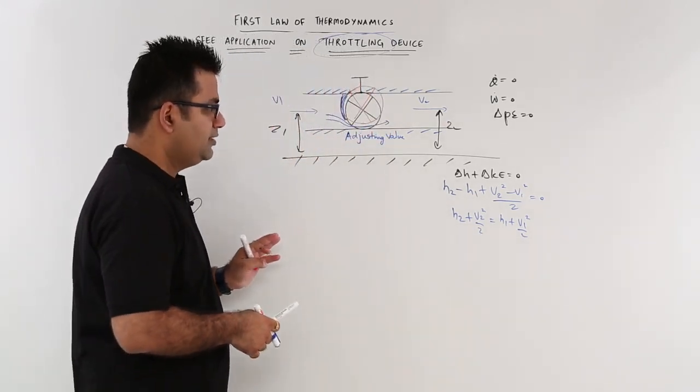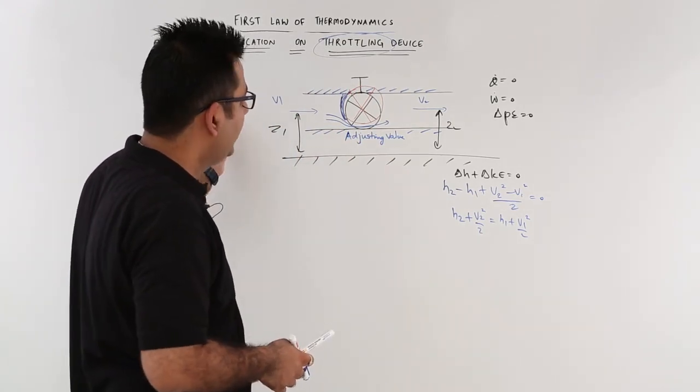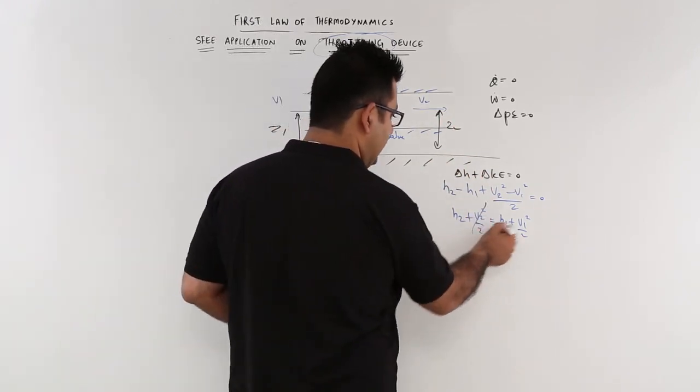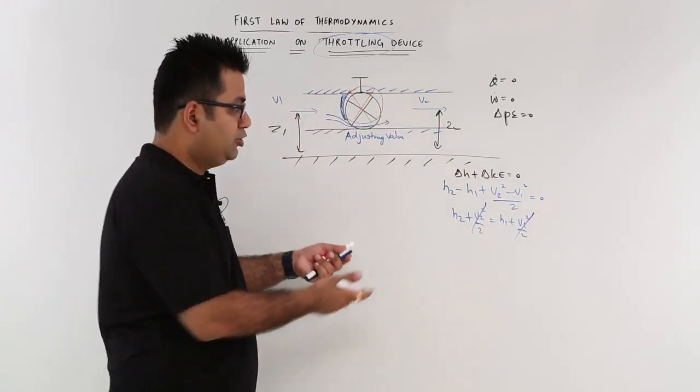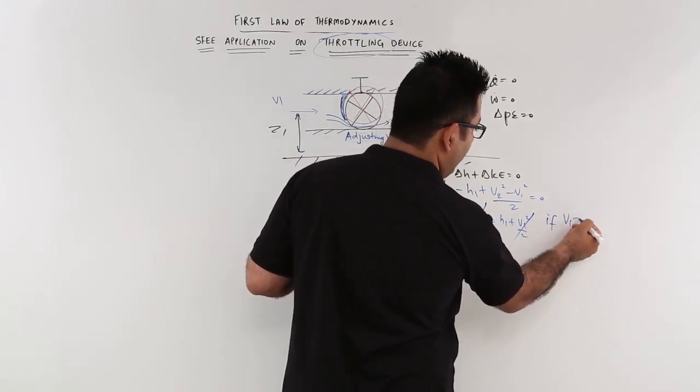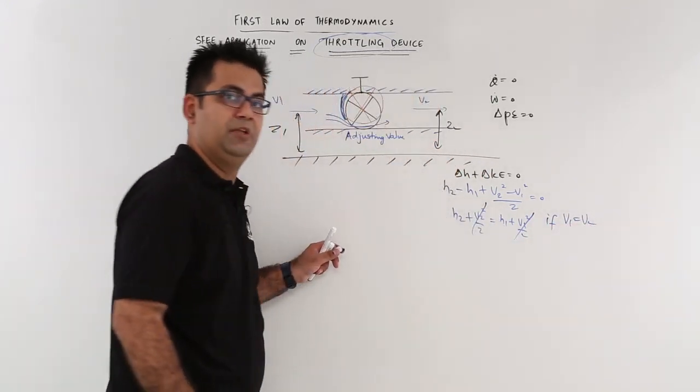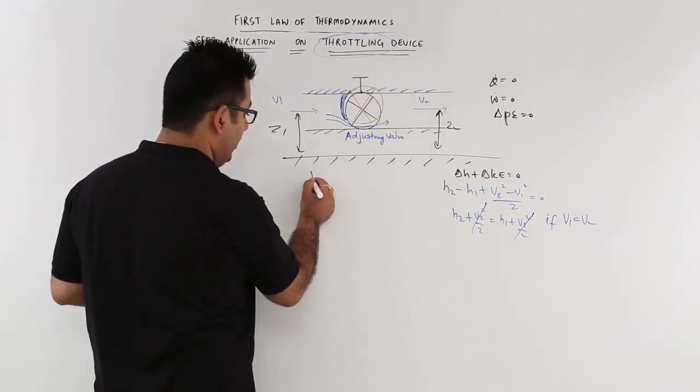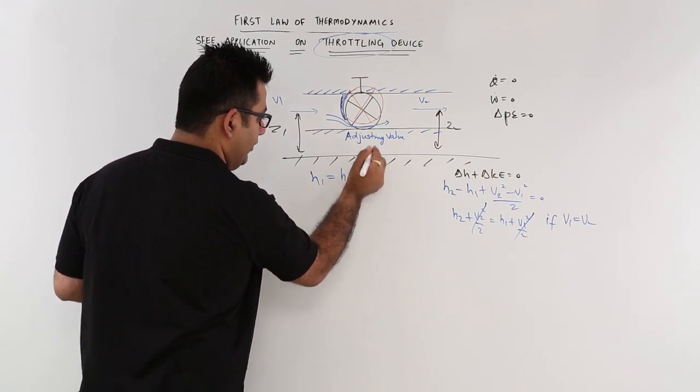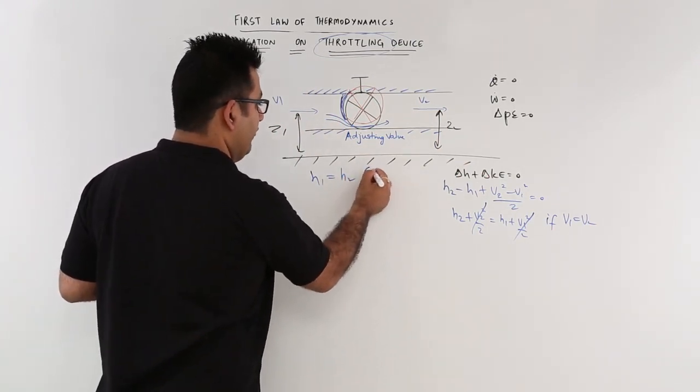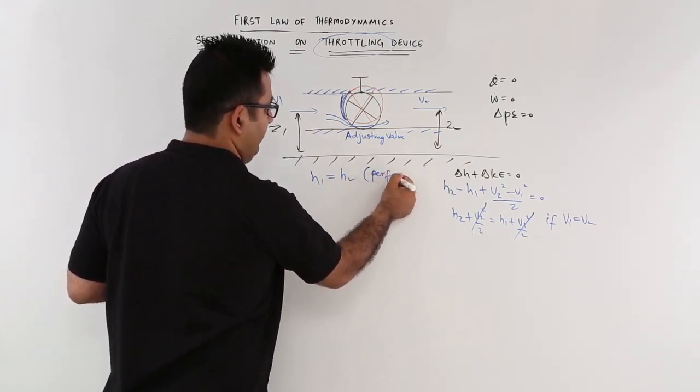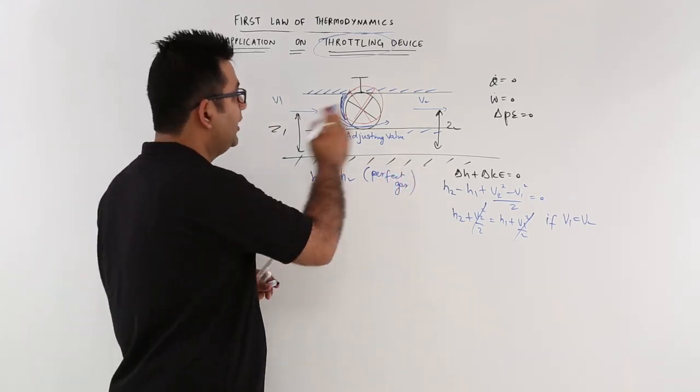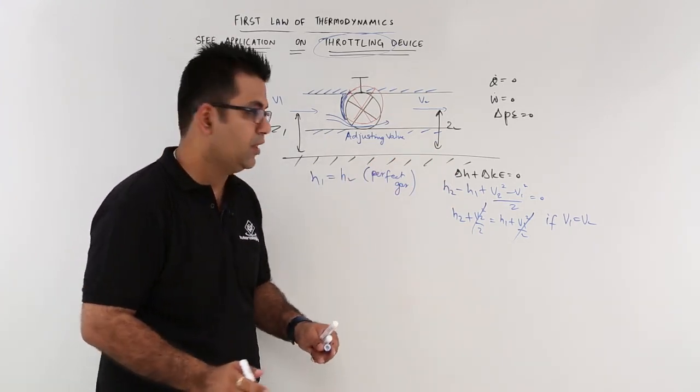Now in some cases the velocity at inlet and the velocity at outlet are very comparable. So you can say that these two would cancel. These two would cancel if V1 becomes equal to V2. There is no velocity increase, it is almost the same. Then you are just left with H1 is equal to H2. This means that for a perfect fluid or for a perfect gas the enthalpy at entrance and outlet is same in the case of throttling.